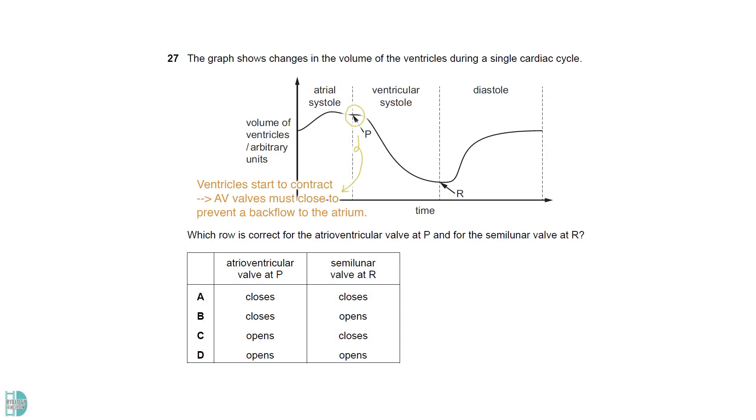P is when the ventricles start to contract. The AV valves must close to prevent a backflow to the atrium. R is when the diastole starts. The pressure in the heart decreases. Semilunar valves close to prevent a backflow from the aorta and pulmonary artery into the ventricles.